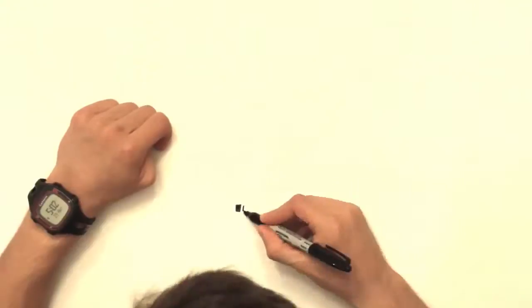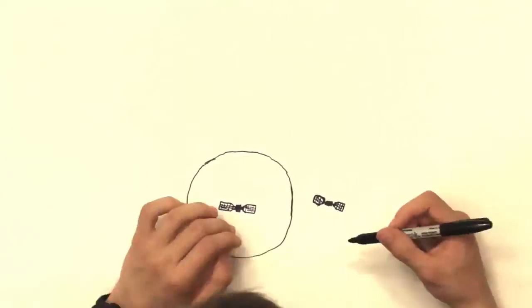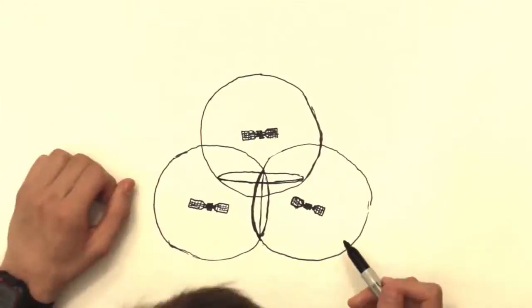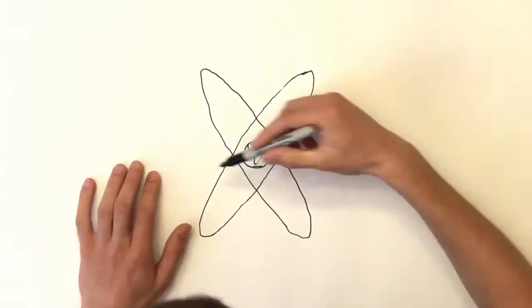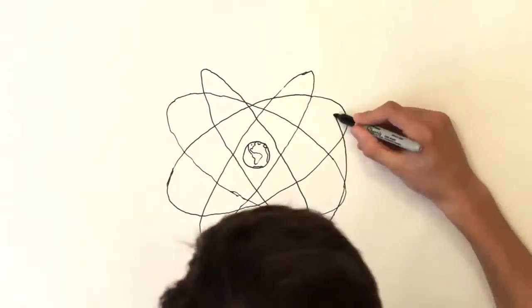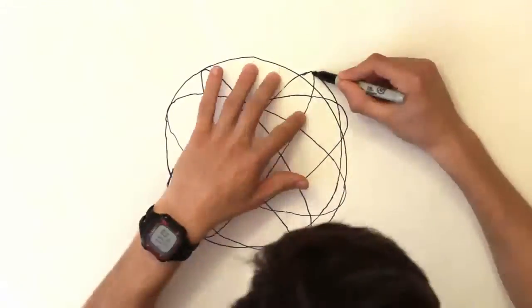It works the same way in three dimensions, but you draw imaginary spheres, and it takes four of those to get a single intersection. The GPS satellites orbit in such a way that there are always at least four of them visible from any spot on Earth.